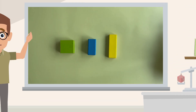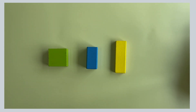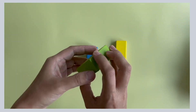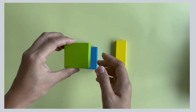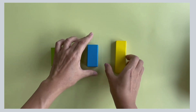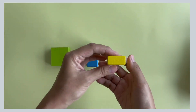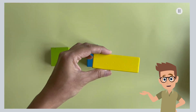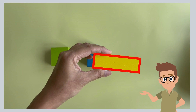Let's look at the first group of solids. They are cuboids. Observe their faces. What is the shape of this face of the cuboid? Pause and discuss with your friends. The shape of this face is a rectangle.